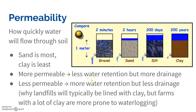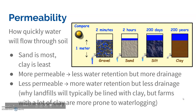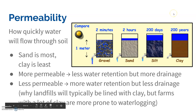The more permeable the soil, the less water it will retain because it just drains right through. Less permeable soil means more water is retained but less drains — something in the middle is ideal. This is why landfills are typically lined with clay: rainwater seeping through creates toxic leachate, and we don't want that entering the local water supply. Since clay doesn't allow water to flow through easily, it also blocks leachate. However, farms with a lot of clay are more prone to waterlogging, which can kill plant roots.